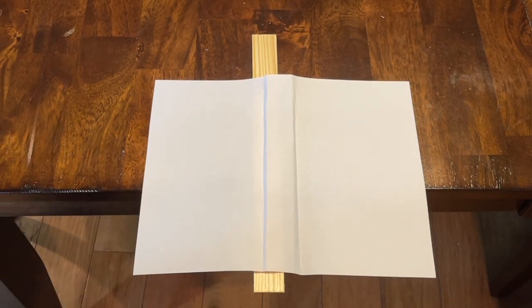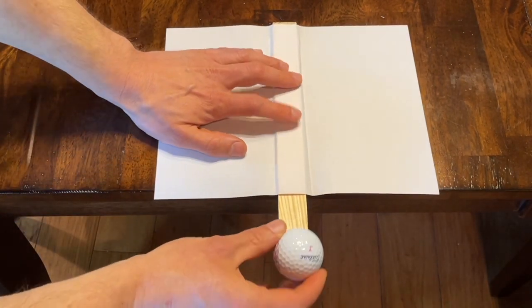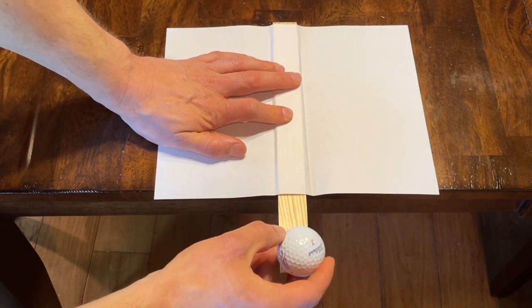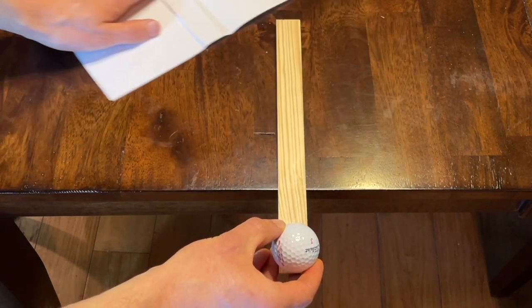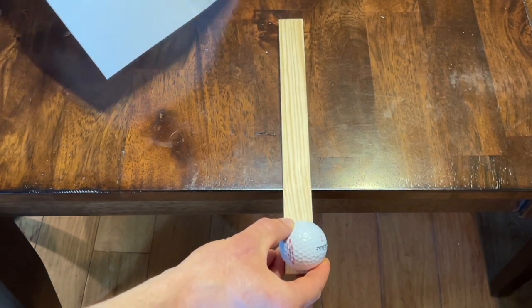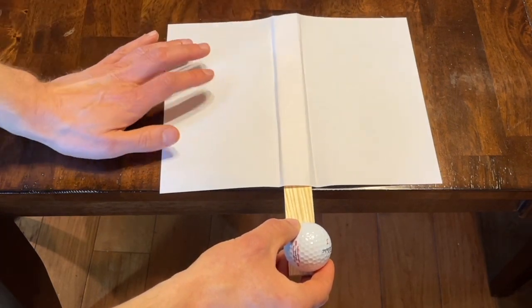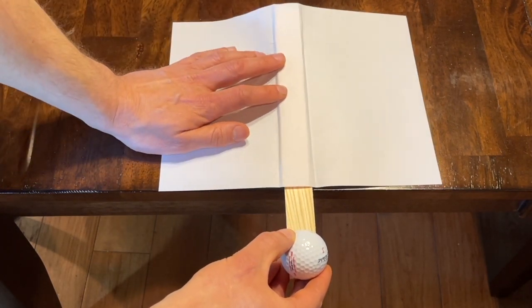So what's going on here? Well what's going on is that when the golf ball hits the end it wants to rock the paint stick off of the table but it's also lifting the piece of paper up with it.